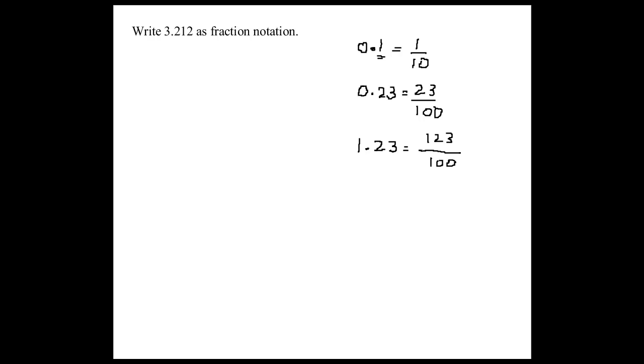Right, so can you tell me now how do you write 3.212 as a fraction? That would be 3,212 over 1,000. Very good, exactly. So we write it over 1,000 because here we have 3 digits after the decimal point and here we use 3 zeros.